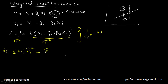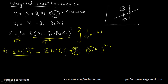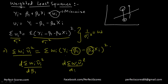This equation transforms into the summation of wi times the error term squared, which equals the summation of wi times (yi minus β1 minus β2xi) whole squared. Since we have to minimize the errors, we require that the rate of change of this expression with respect to β1 and with respect to β2 is equal to zero.